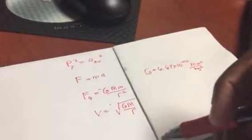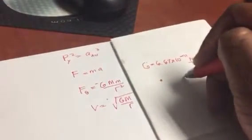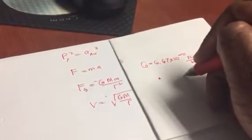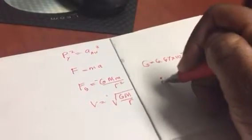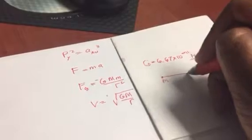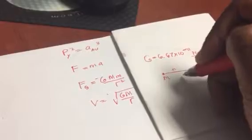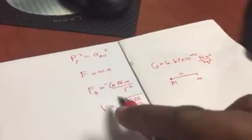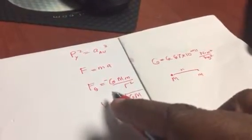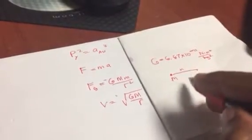So basically, what Newton's saying is if I had two different masses—I'm gonna say this is big M, this is little m, and the distance in between them is R—the distance in between these masses dictates how strong the gravitational force is, and the product of the masses also dictates how strong the gravitational force is between the two masses.